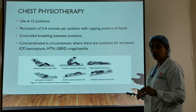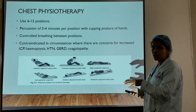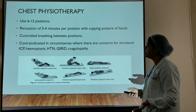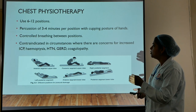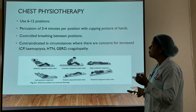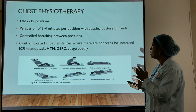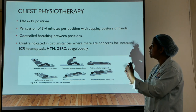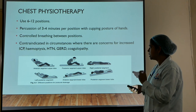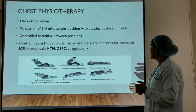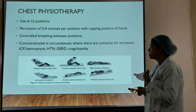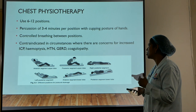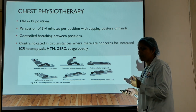Chest physiotherapy is another important part of pre-operative optimization. It uses 6 to 12 positions in which percussion is performed for 3–4 minutes per position with cupped hands, with controlled breathing between positions. It is contraindicated in cases of raised intracranial pressure, symptoms associated with hemoptysis, hypertension, gastroesophageal reflux disease, or coagulopathy.